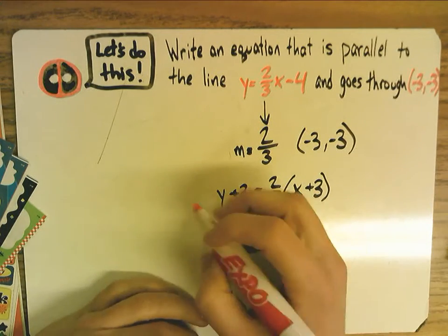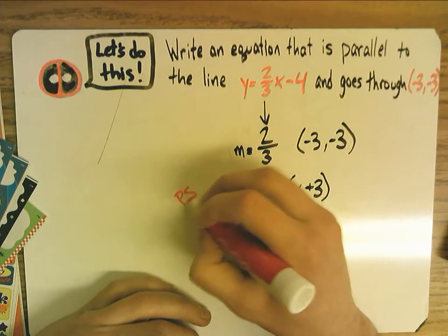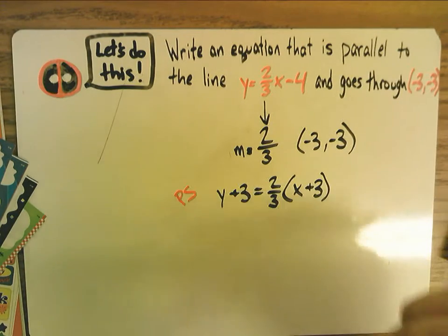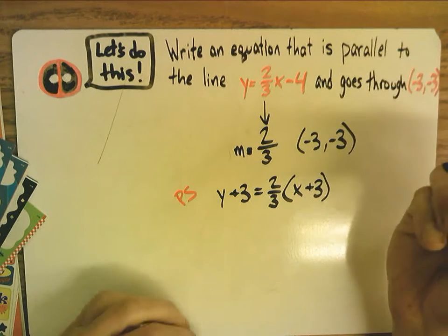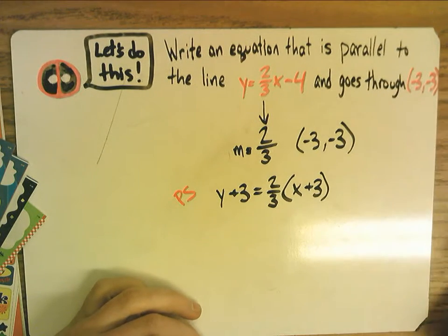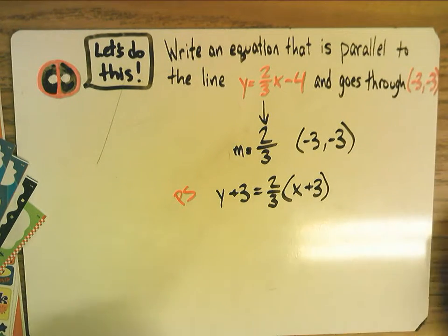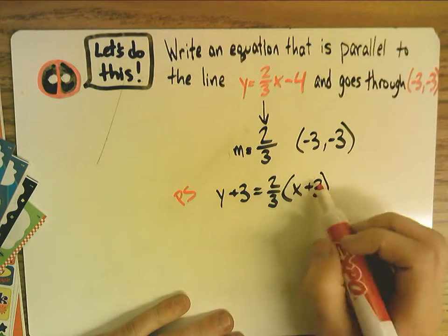However, we want it into slope-intercept form. It doesn't say that in the directions, but whenever we're dealing with parallel and perpendicular line writing, unless it says otherwise, we want to put it into slope-intercept form. Okay, so remember to get it into slope-intercept form, we have to distribute, and then we isolate y.